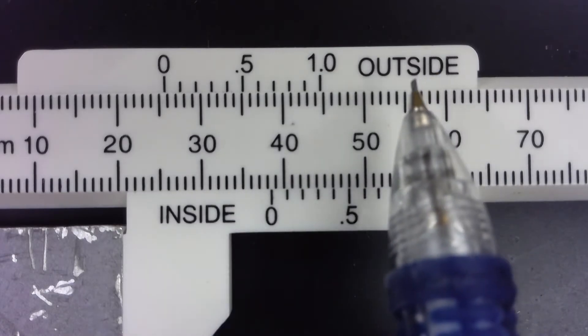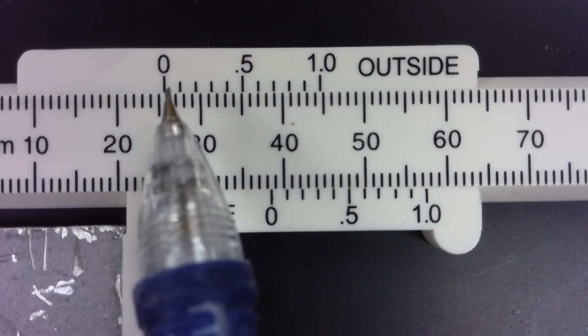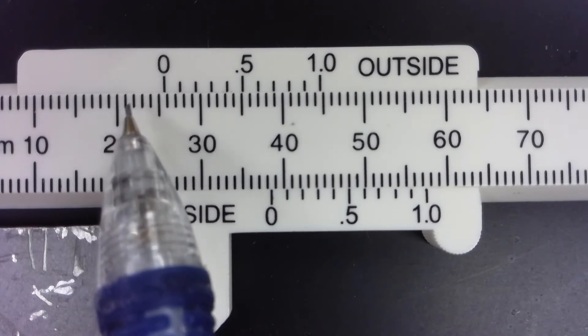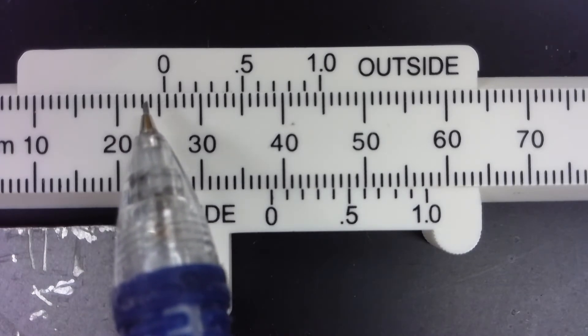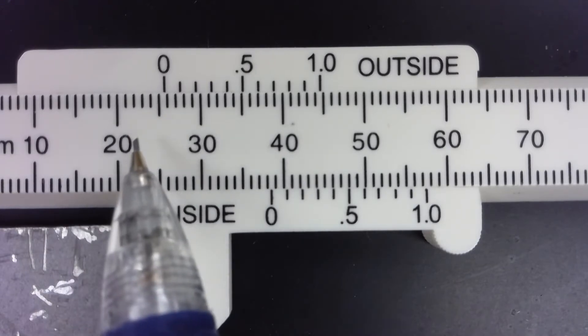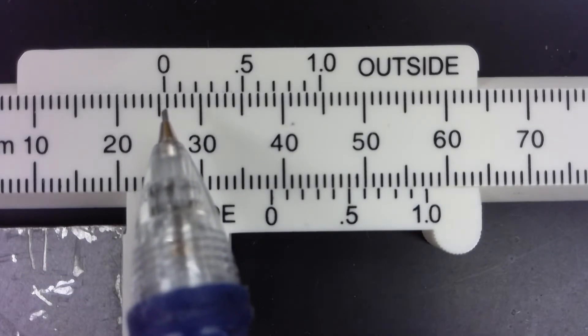When we're reading the outside dimension of an object, which is what we're doing here, we read from where this zero is. So this is 21, 2, 3, 4, 5. So there's 25 millimeters. But we can see it's a little bit past halfway to the 26th line.